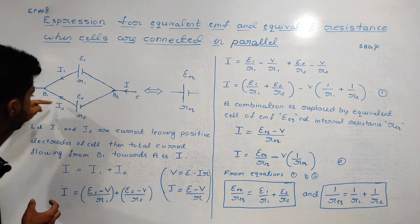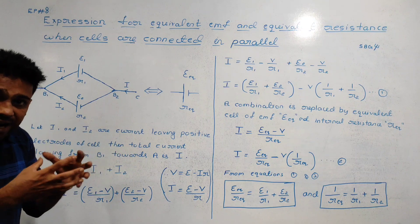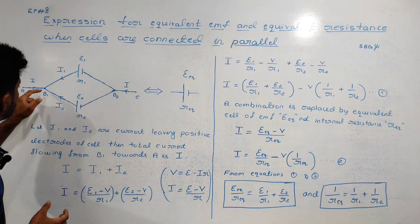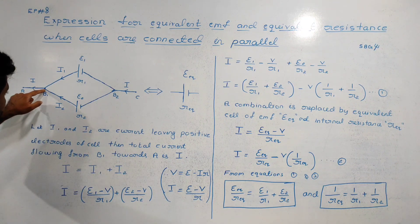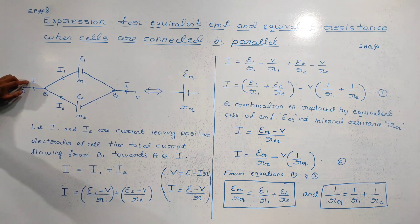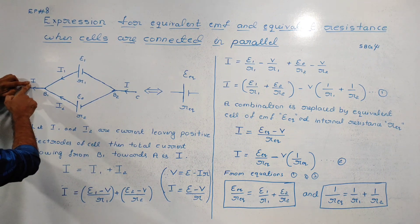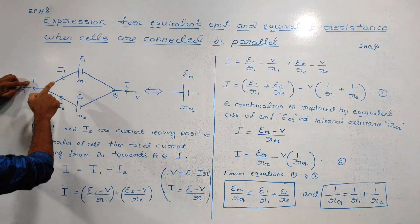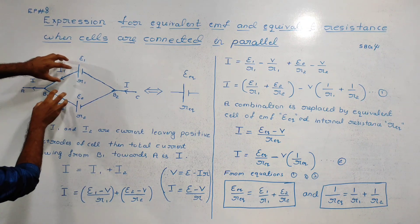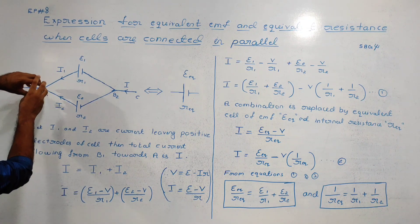I1 and I2 add from B1 to A. So, I is equal to I1 plus I2.